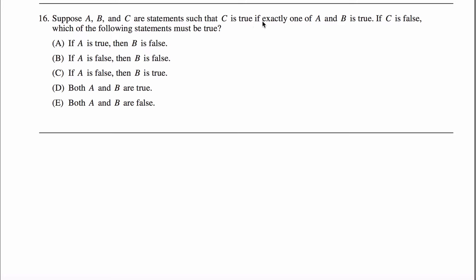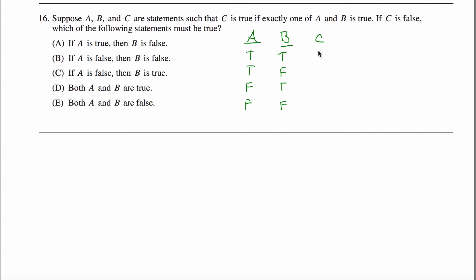These are statements such that C is true if exactly one of A and B are true. If you can set this up — here's A, here's B, here's C. A could be true and B could be true. A could be true and B could be false. A could be false and B could be true. Or A could be false and B could be false. Those are my only four possibilities, and now I'm going to look at what happens to C.